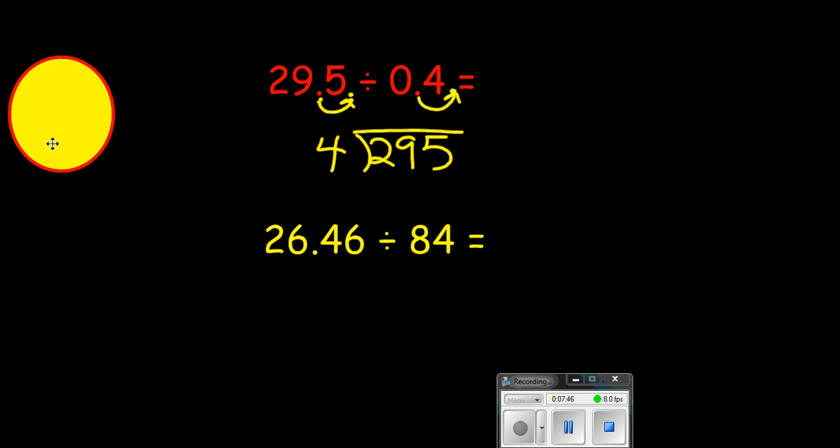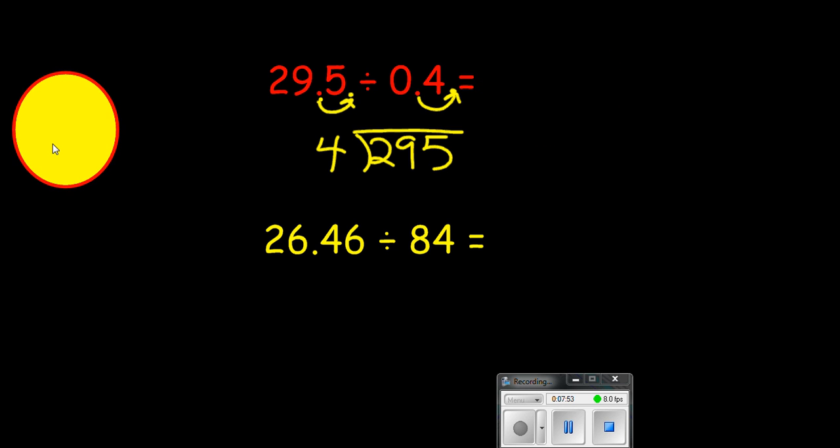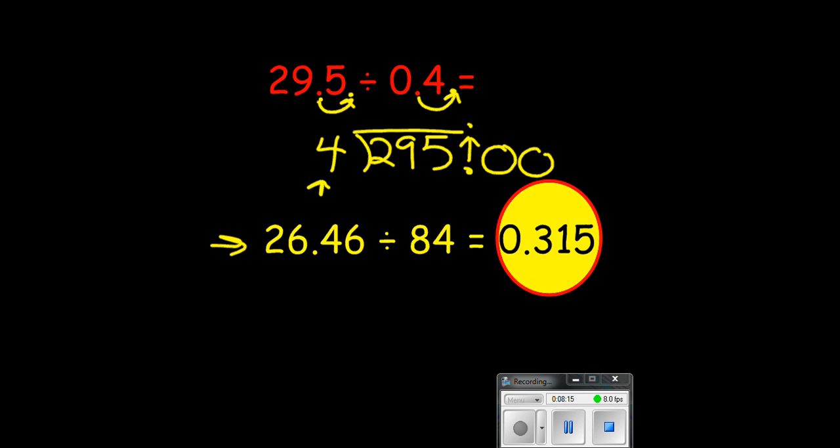Alright, so if we check your work, your answer should have been 73 and 75 hundredths. Don't forget that when you add that decimal in there behind the 5, you can add extra zeros, and the decimal will go straight up at this point since there is no decimal in my divisor anymore. You'll have to do the same thing for this problem. Go ahead and try it on your own. Now we're going to check the work. Did you get 315 thousandths? If you did, you are absolutely correct.